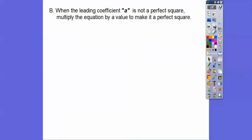So now when the leading coefficient a is not a perfect square, then we multiply or sometimes we divide, but we'll do multiply here, the equation by a value that makes it a perfect square. So then we can do what we just did. So let's go ahead and solve.